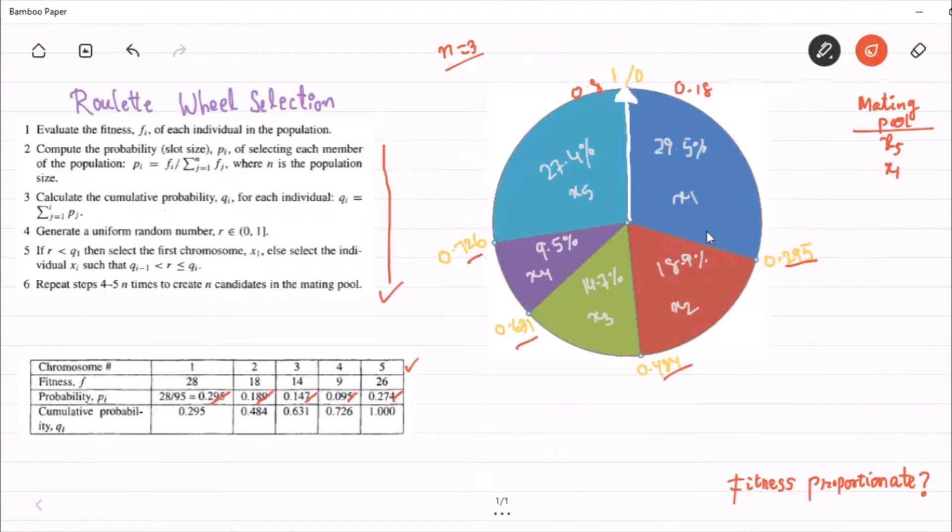where is 0.5? Let us say 0.5 is here. Then x3 is going to be part of the mating pool.